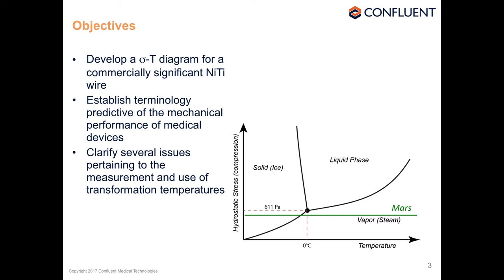The Mars ice skater decides to go to Earth for the Olympics. She Googles Earth, finds that vapor doesn't form until 100°C, and that ambient temperature is only 20–25°C. She concludes she can ice skate anywhere on Earth. She checks one last time — 'When does vapor form?' '100°C.' 'What's the temperature?' '22°C.' And off she goes to skate across Lake Michigan and promptly drowns. She asked the wrong question. Instead of asking when the high-entropy vapor phase forms, she should have asked when the low-entropy ice phase reverts.